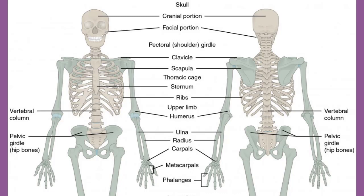Each bone of the body serves a particular function, and therefore bones vary in size, shape, and strength based on these functions. For example, the bones of the lower back and lower limb are thick and strong to support your body weight. Similarly, the size of a bony landmark that serves as a muscle attachment site on an individual bone is related to the strength of those muscles. Muscles can apply very strong pulling forces to the bones of the skeleton, and to resist these forces, bones have enlarged bony landmarks at sites where the powerful muscles attach.